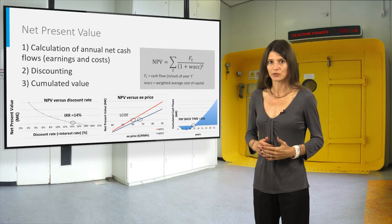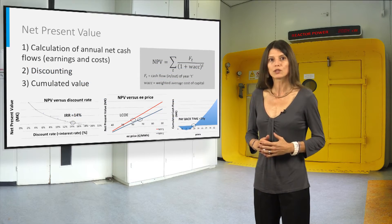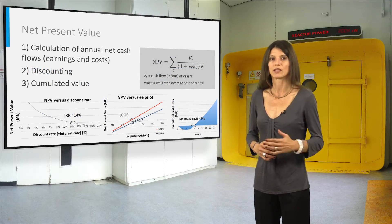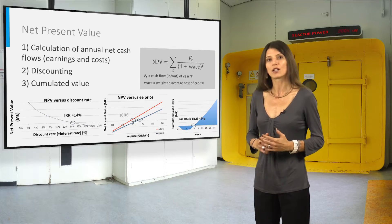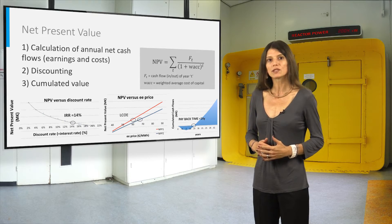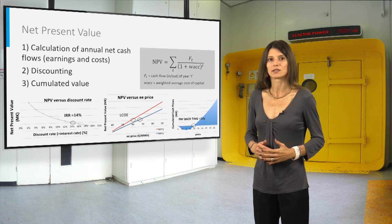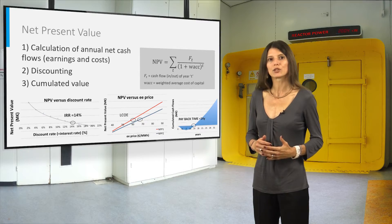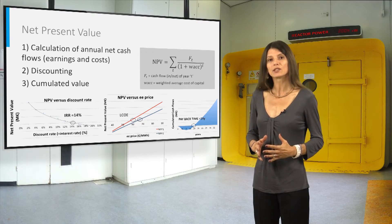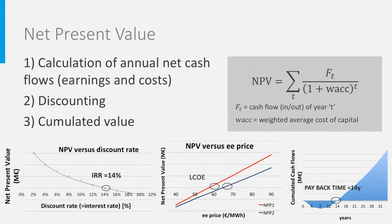In order to calculate the NPV, all the cash flows — both positive and negative — are considered, discounted and accumulated. The internal rate of return is the interest rate that breaks even the NPV. In the discounted cash flow (DCF) approach, LCOE may be calculated as the electricity price that breaks even the NPV.